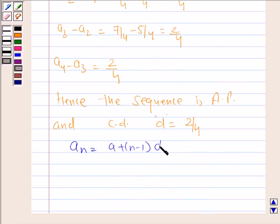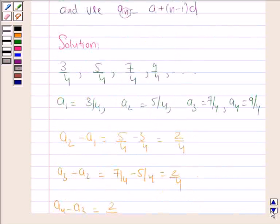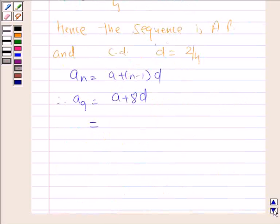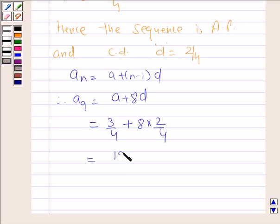Therefore, a_9 is equal to a plus 8d, where a is the first term. The first term was 3/4 and d is the common difference. So a_9 is 19/4 after solving this.